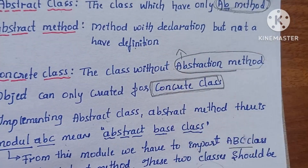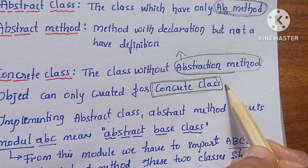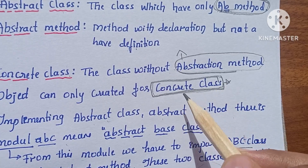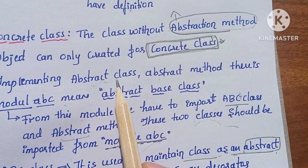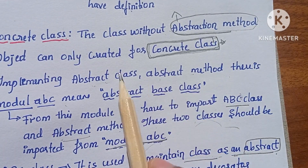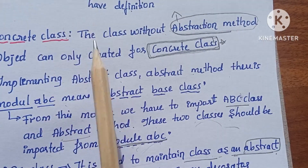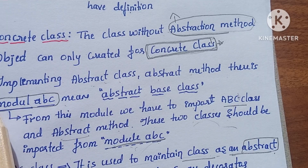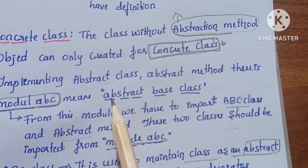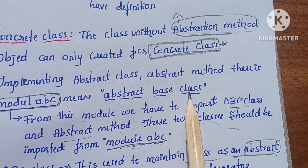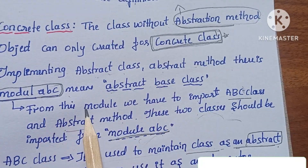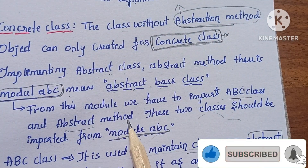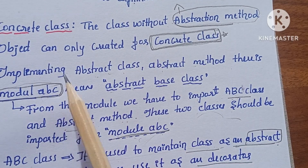This is the important point. To use abstract classes in Python, we use the module ABC. ABC means Abstract Base Class — that is the full form. From this module, we have to import the ABC class and the abstract method.